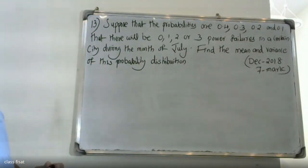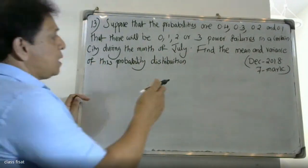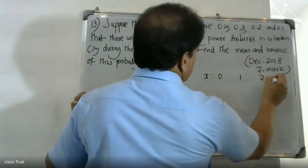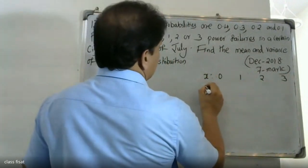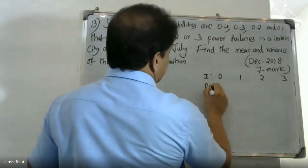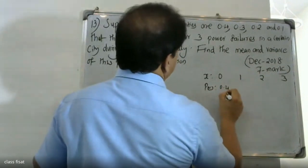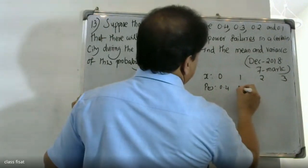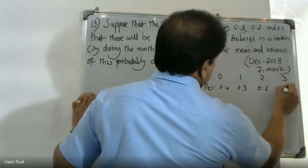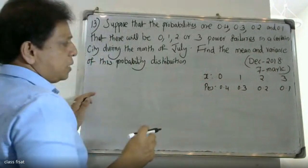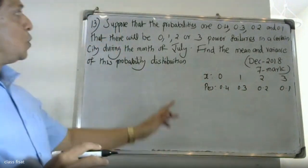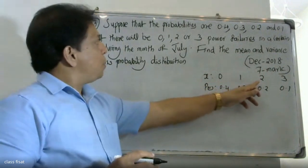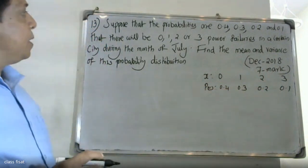First we need to find the probability distribution table. X takes values 0, 1, 2, 3, and the corresponding probabilities P of X are 0.4, then 0.3, 0.2, 0.1. So we have X: 0, 1, 2, 3 with P(X): 0.4, 0.3, 0.2, 0.1.